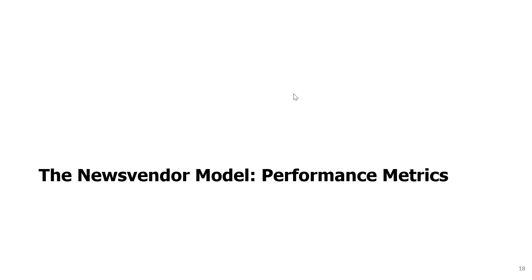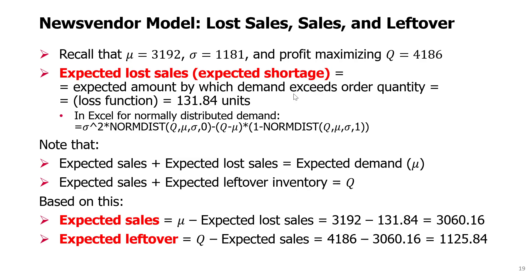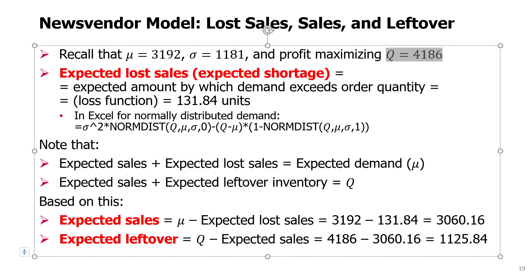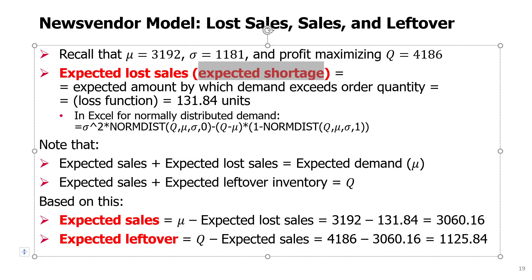The NewsVendor model performance metrics. Once we choose an order quantity — for example, Q equals 4,186, the optimal quantity to order for our seasonal product — in this case we chose it using a profit maximization objective, but we could have chosen it for other reasons. For this quantity, we can evaluate several metrics that might be interesting to us. The first three metrics will be expected lost sales, also called expected shortage, then expected sales, and expected leftover.